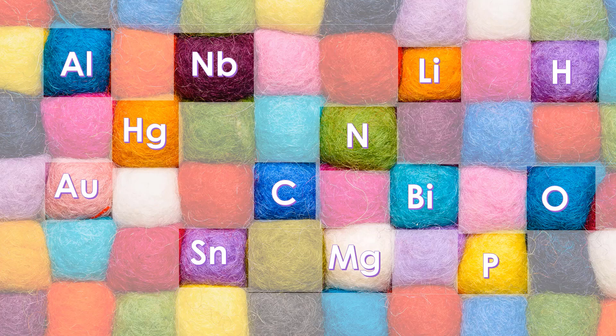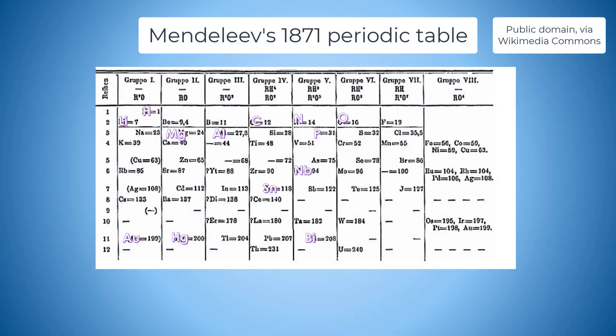Mendeleev wasn't the first to order the elements by increasing atomic weight but he arrived at this order by writing the elements properties on cards which he rearranged so that they regularly occurred.